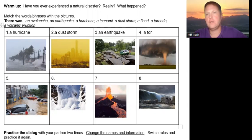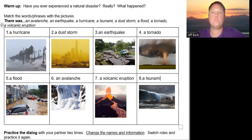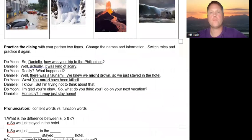Number five, what happened? There was a flood. Number six, what happened? There was an avalanche. Number seven, what happened? There was a volcanic eruption. Number eight, what happened? There was a tsunami.